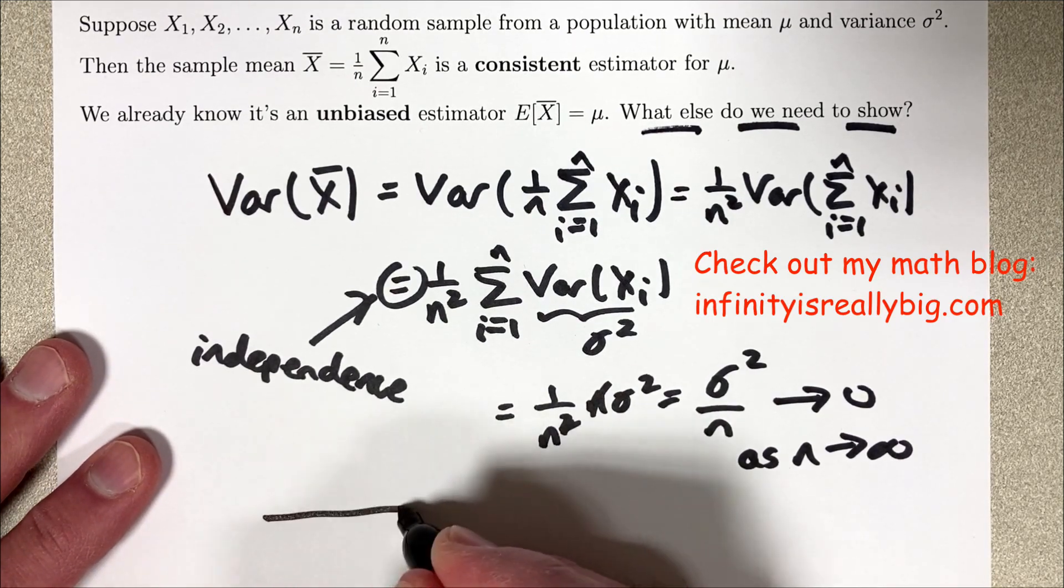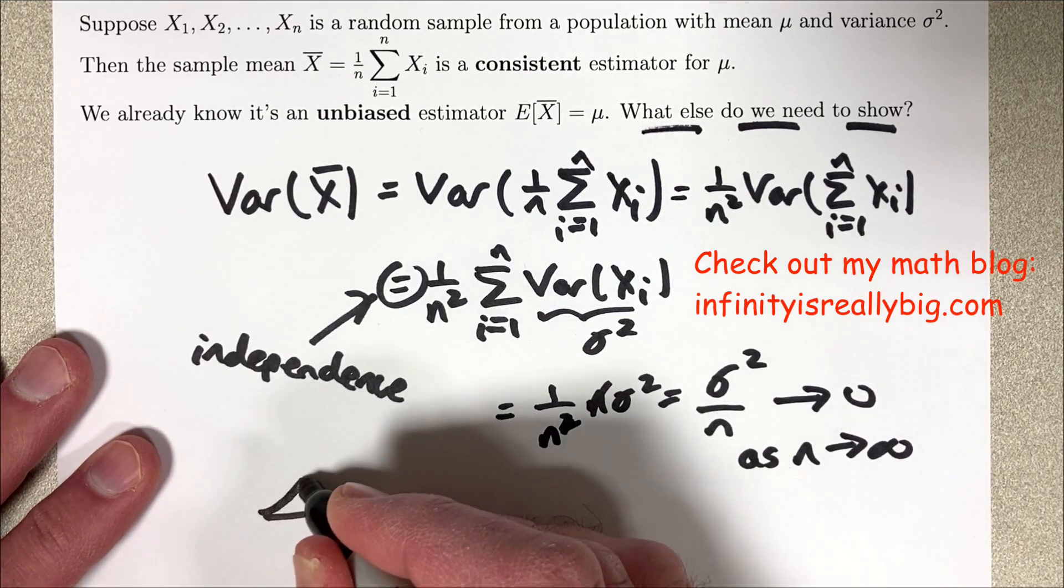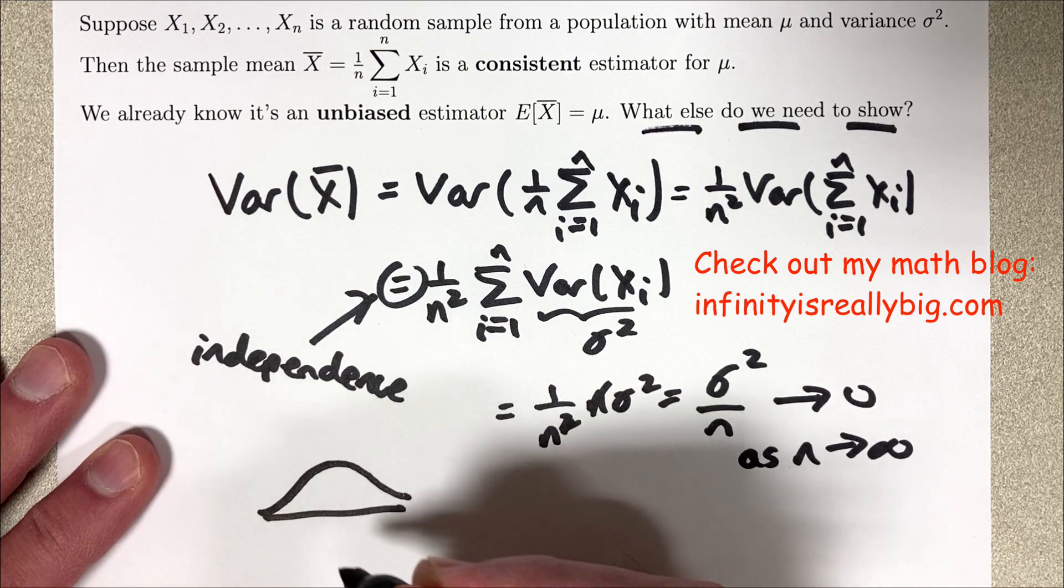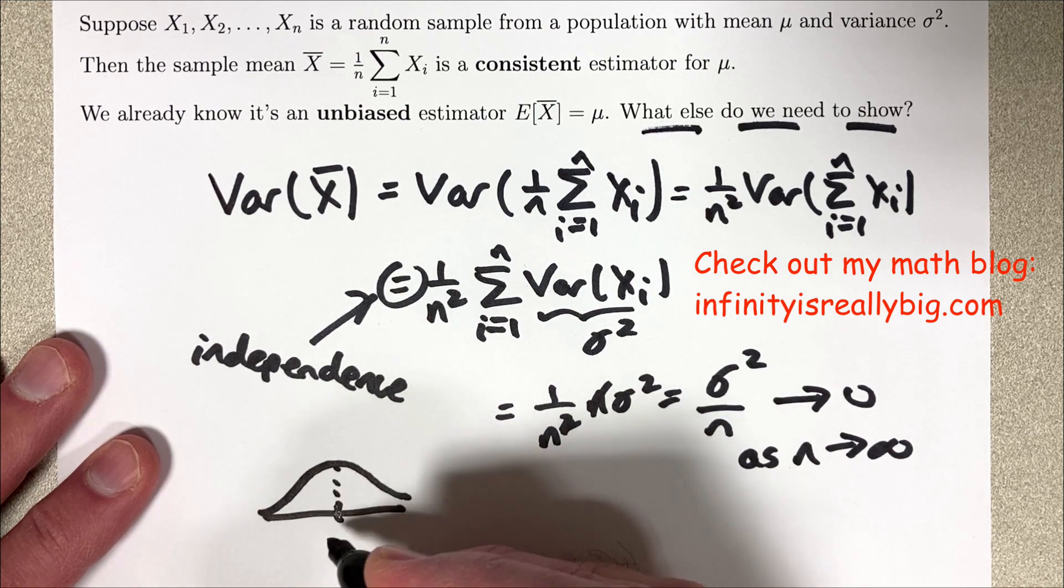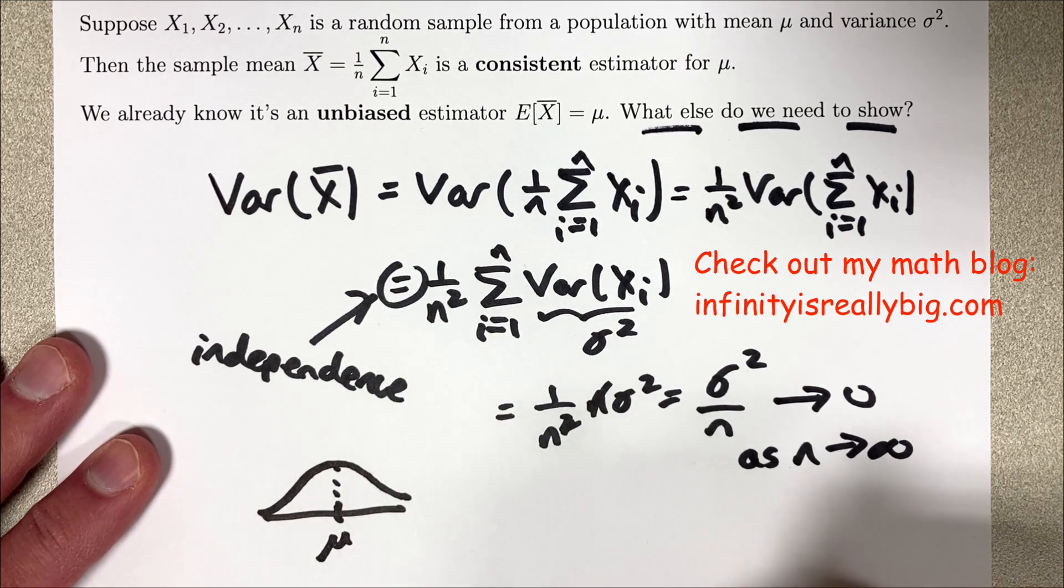Intuitively, in terms of the sampling distribution of x bar, since x bar is unbiased, it will be centered on the population mean mu and it will look like a normal curve when n is large enough by the central limit theorem.